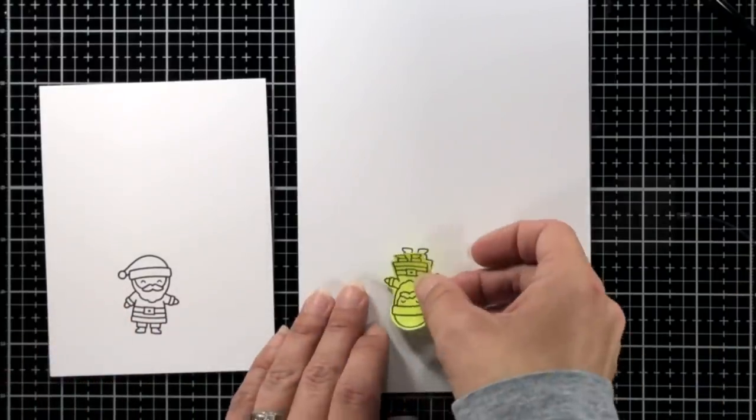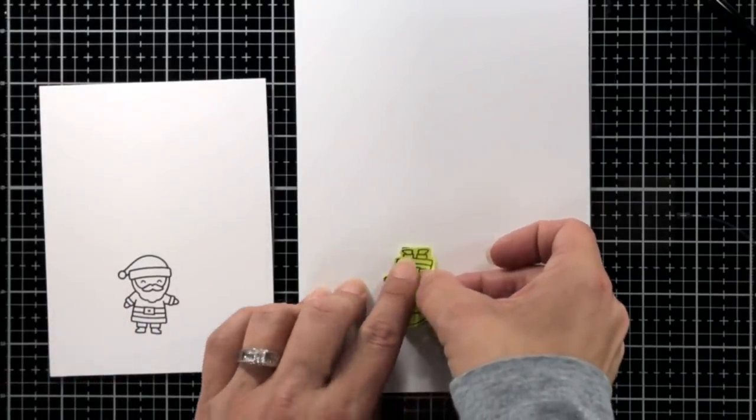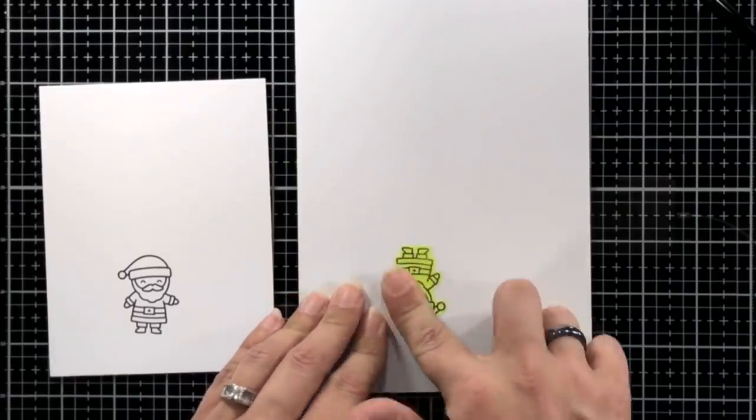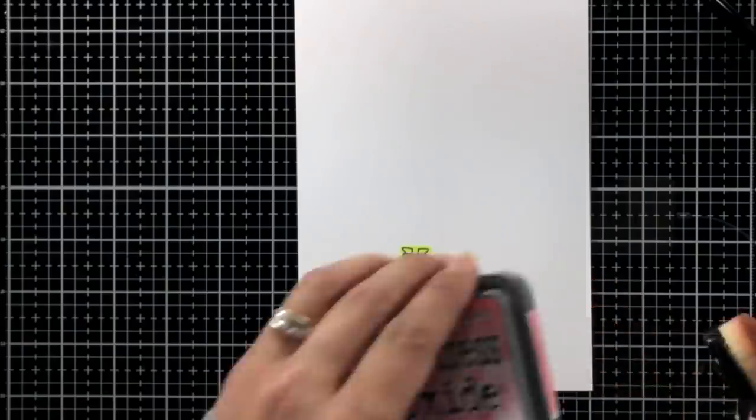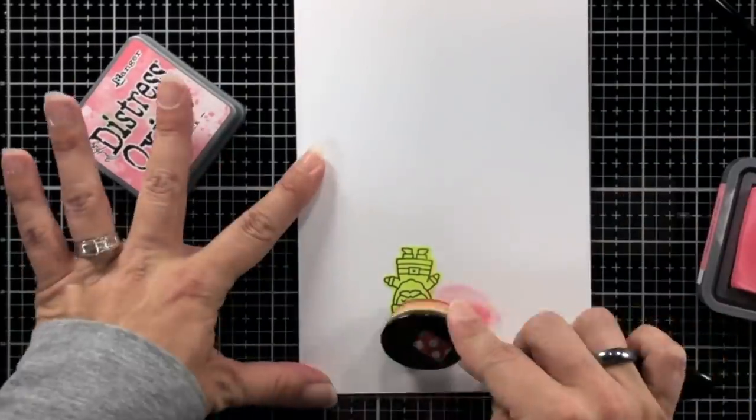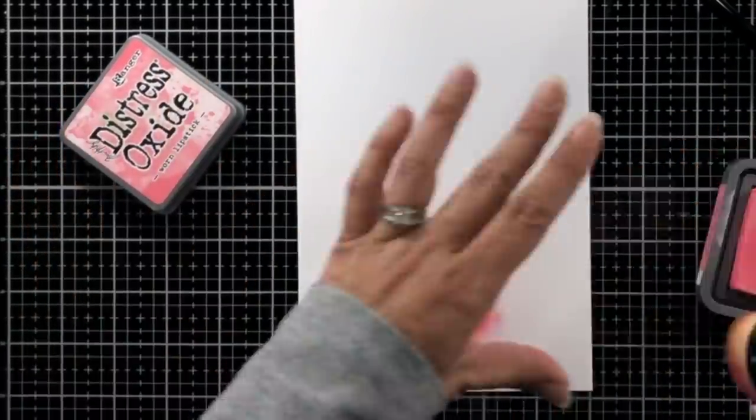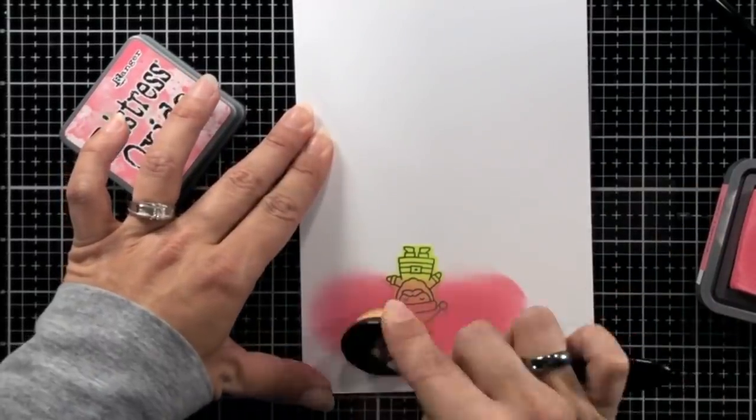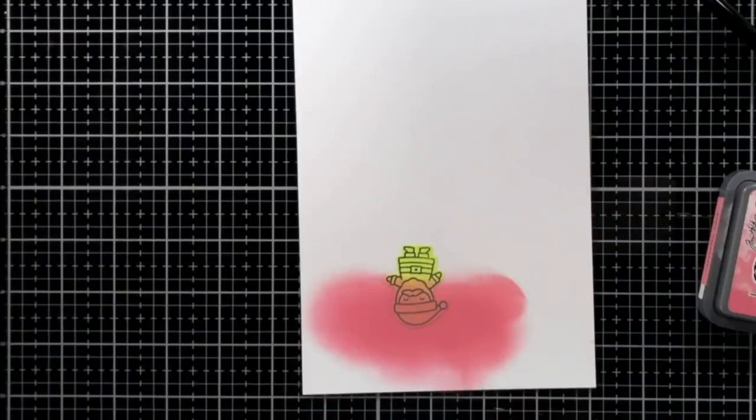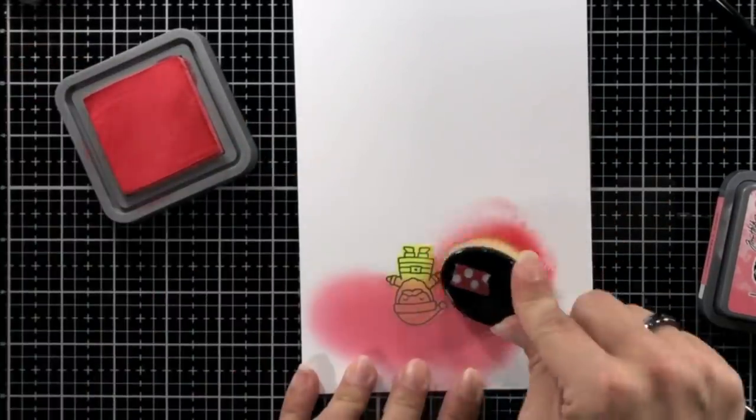And now we can work on some ink blending with our images that will be in the magic picture changers. So I decided to wait on the coloring, I'm going to do my ink blending first. So I'm starting off by putting my mask down on my Santa, and then I'll ink blend the background with the same colors that I did except for the dark one. So I did worn lipstick and festive berries.